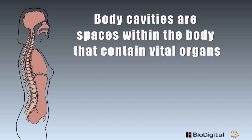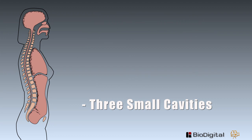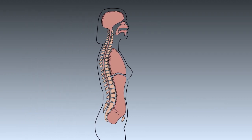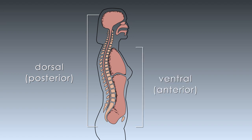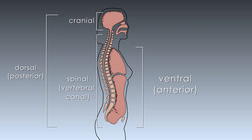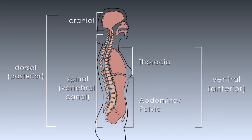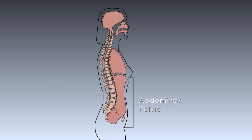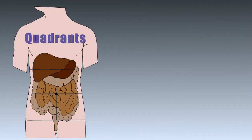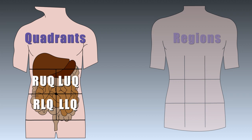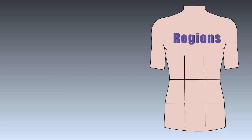Now let's review. Body cavities are spaces within the body that contain vital organs. There are two main cavities and three small ones. The small cavities are the orbital, nasal, and buccal cavities. The two main cavities are the dorsal, which is the back, and the ventral, in the front. The dorsal is divided into the cranial and spinal; the ventral is split into the thoracic and the abdominal pelvic cavities, separated by the diaphragm. The abdominal cavity can be broken down by quadrants or regions — the four quadrants are right upper, right lower, left upper, and left lower.